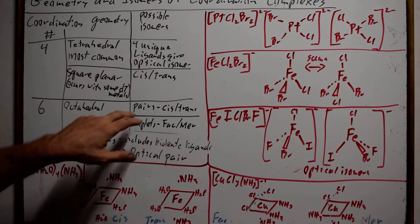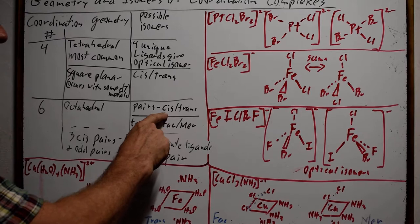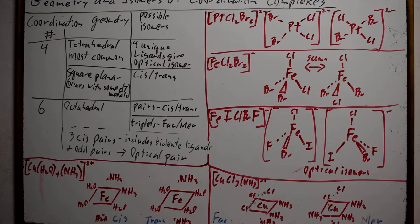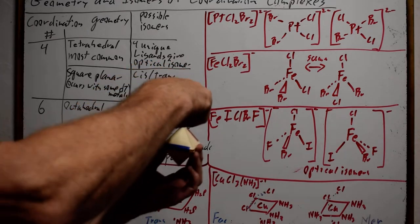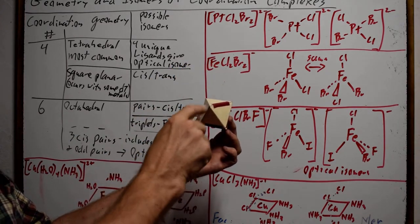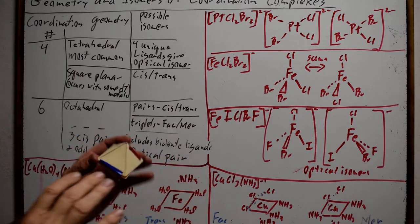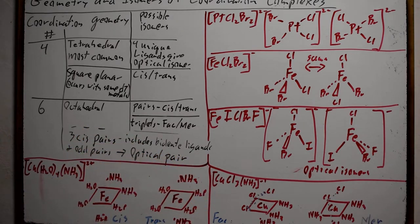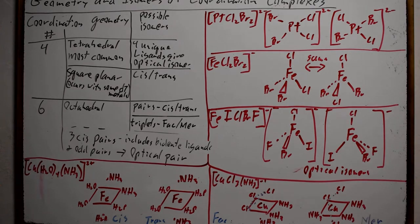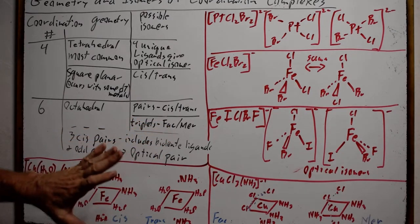In the octahedral, when we have pairs — two identical atoms — they can be adjacent to each other. For any particular position on the octahedral, the top position is cis to four positions and trans to only one position. That covers cis-trans. When we have three identical ligands — a triplet — we have a fac-mer type of isomer.